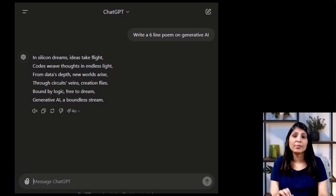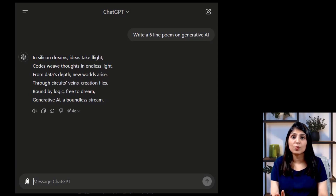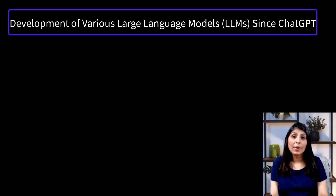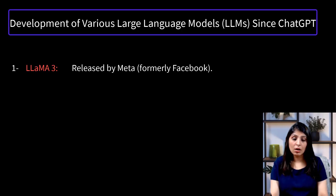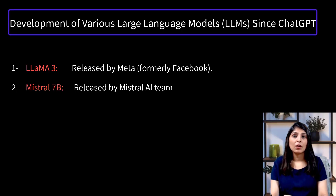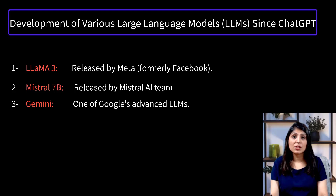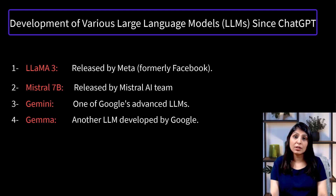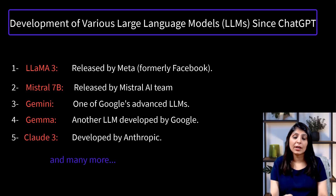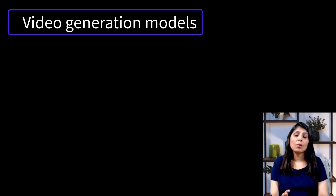Since ChatGPT was released, we have seen the development of various large language models, like LLaMA 3 by Meta, Mistral 7B, Gemini by Google, Gemma which is another model by Google, and Claude 3 by Anthropic — there are now many large language models available.